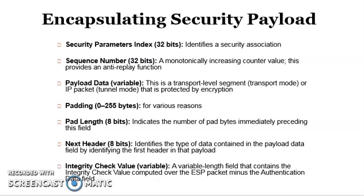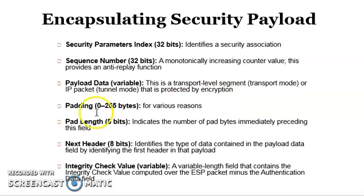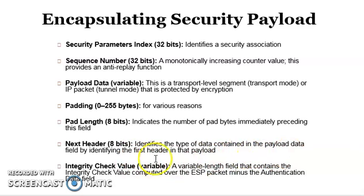The security parameter index is 32 bits and identifies the security association. The sequence number monotonically increases the counter value and provides the anti-replay function. Payload data is a transport layer segment in transport mode or tunnel mode, protected by encryption. Padding of up to 255 bytes is added for various reasons. Pad length indicates the pad bytes immediately preceding the field. Next header is 8 bits identifying the first header in the payload. The integrity check value, ICV, is variable and contains the integrity check computed over the ESP packet minus the authentication data field.